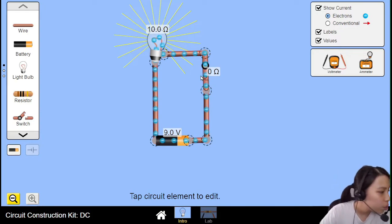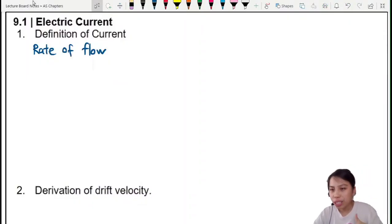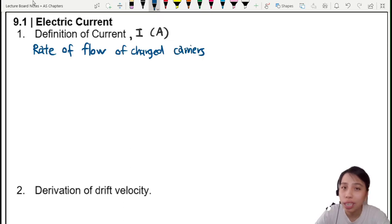But we need to define first what is current. Current is basically all this stuff flowing around. But it's not just any flow, current flow. The Cambridge definition is that you want to say what is current. Well, current we use the symbol I in units of amperes. Because Ampere kind of played a big role. So the definition you want to write down is the rate of flow of charged carriers. By the way, current is a scalar.